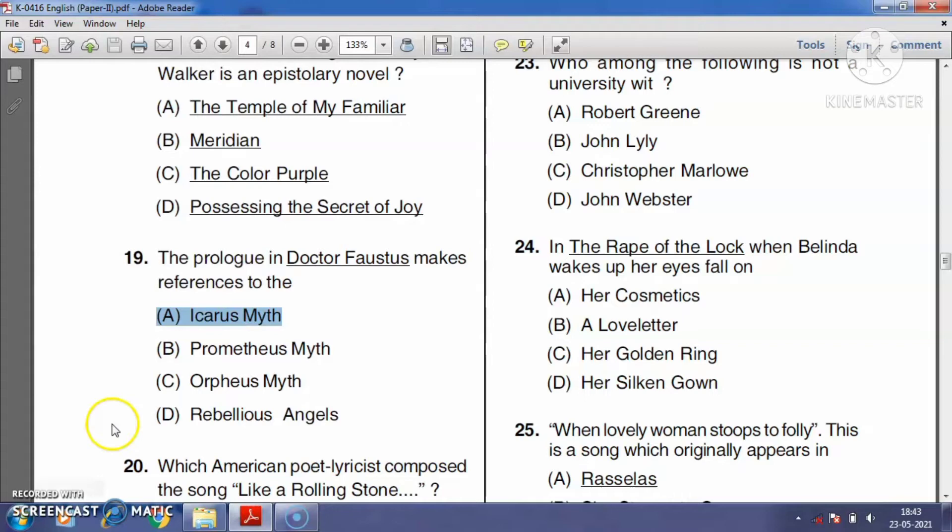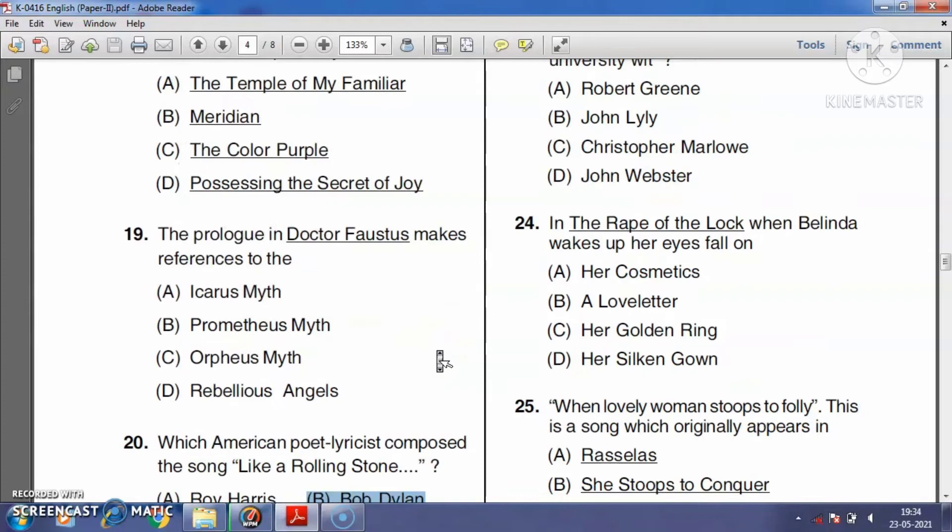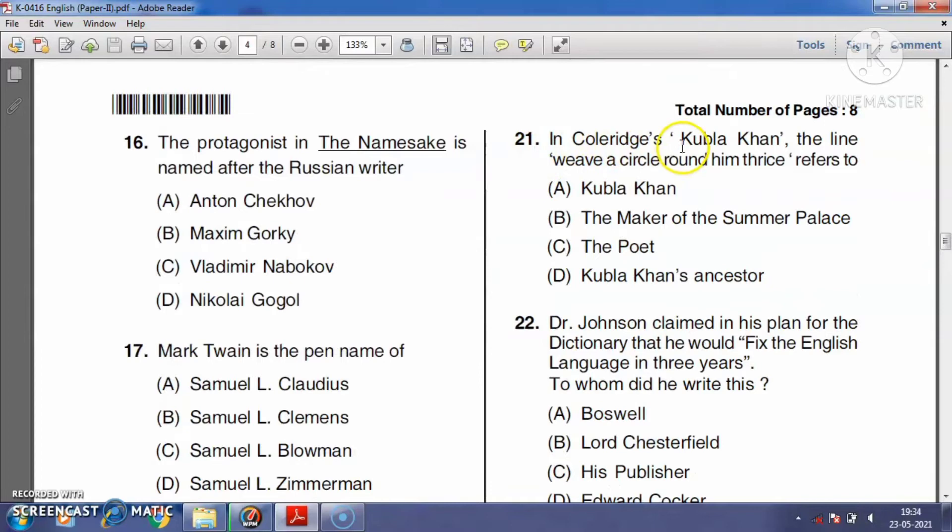Question number twenty: Which American poet and lyricist composed the song 'Like a Rolling Stone'? The right answer is option B, Bob Dylan.